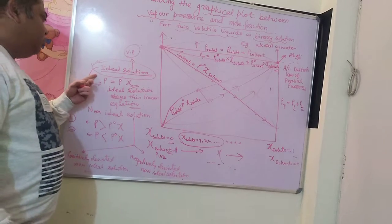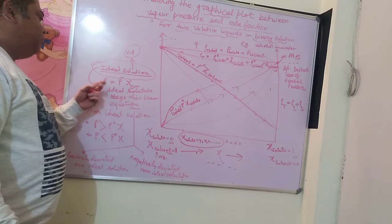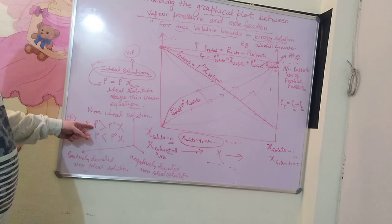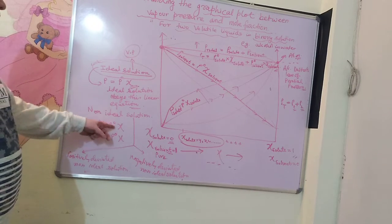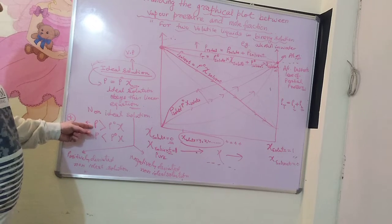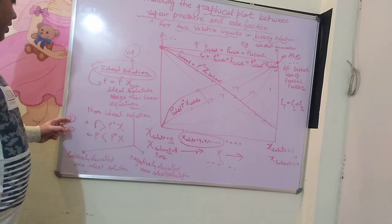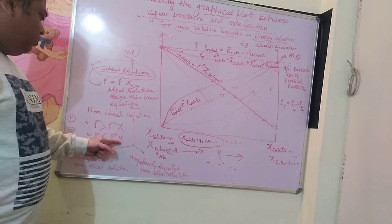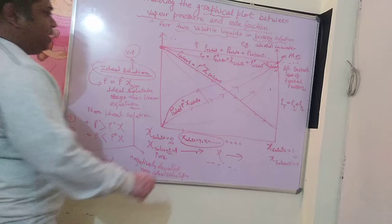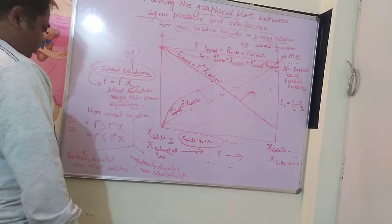For a non-ideal solution, vapour pressure is not proportional to mole fraction. If the pressure after addition of solute is greater than expected, it is a positive deviation non-ideal solution. If the pressure is less than expected, it is a negative deviation non-ideal solution.